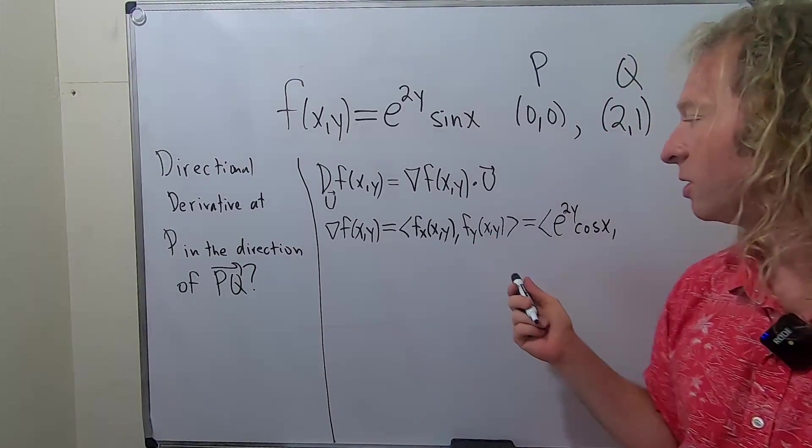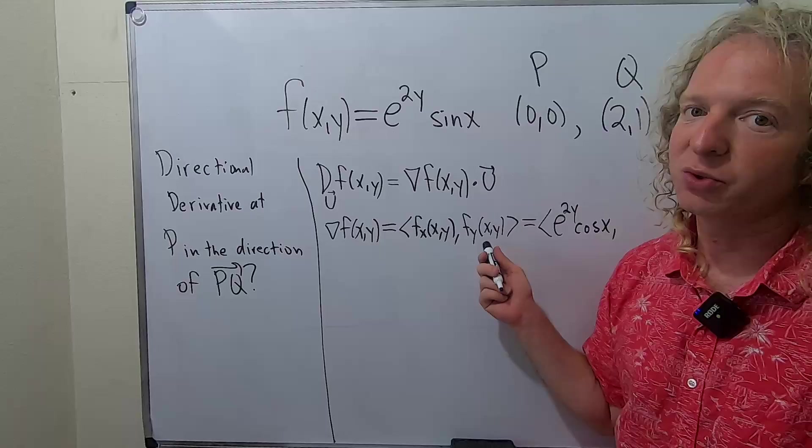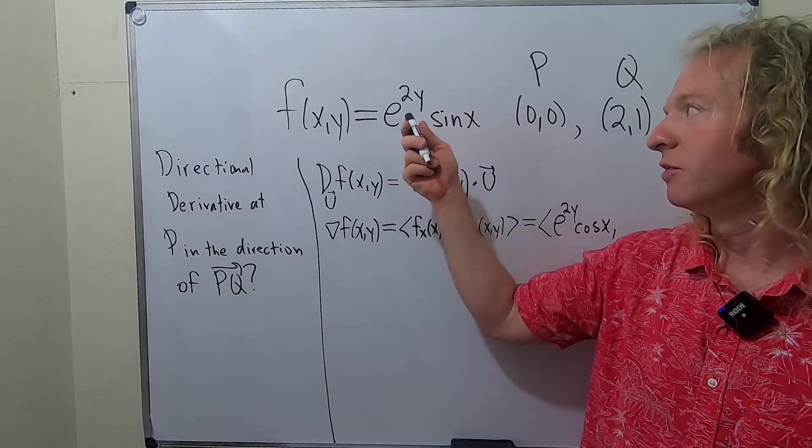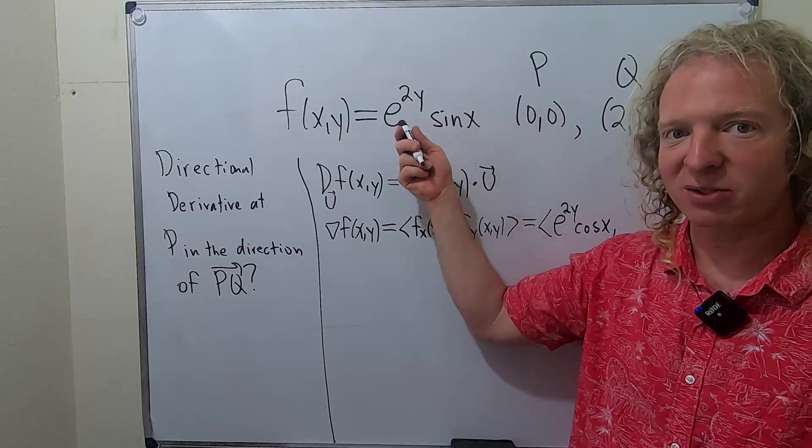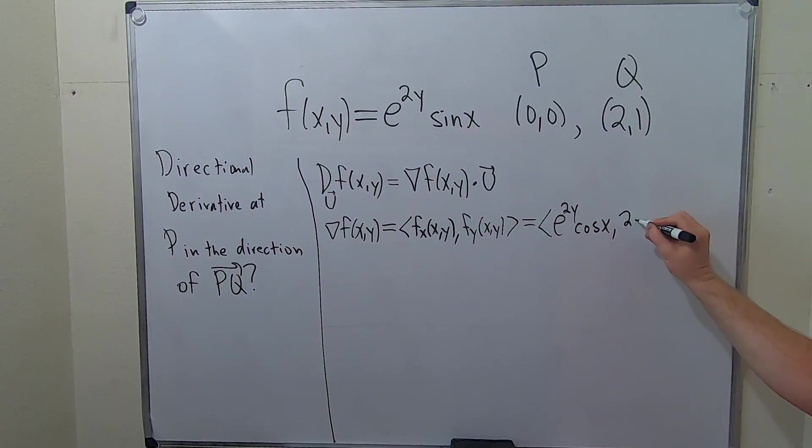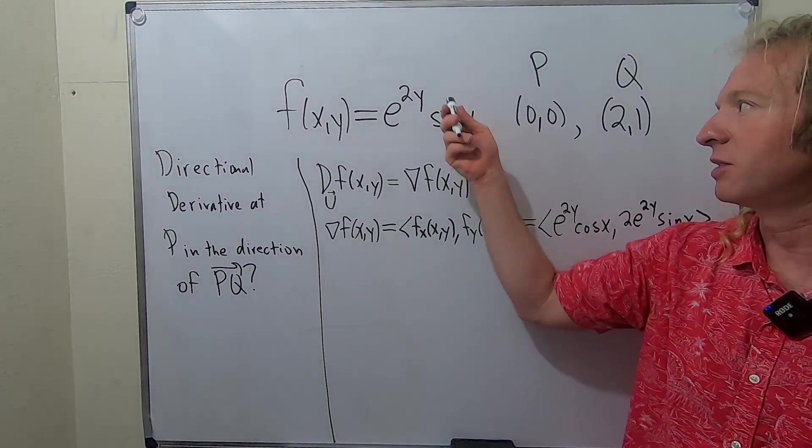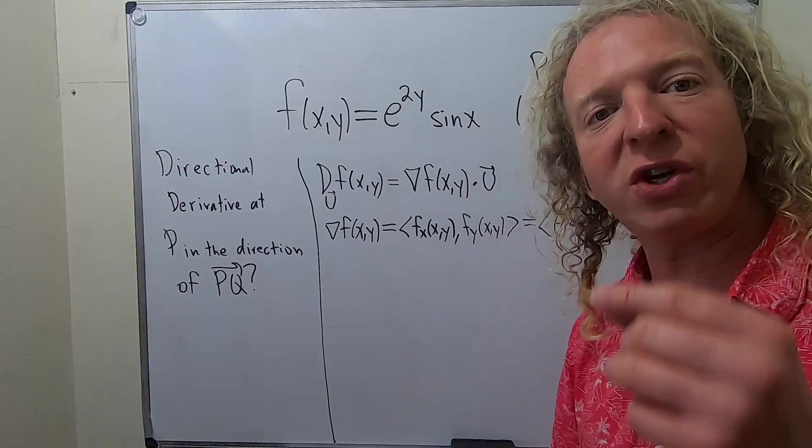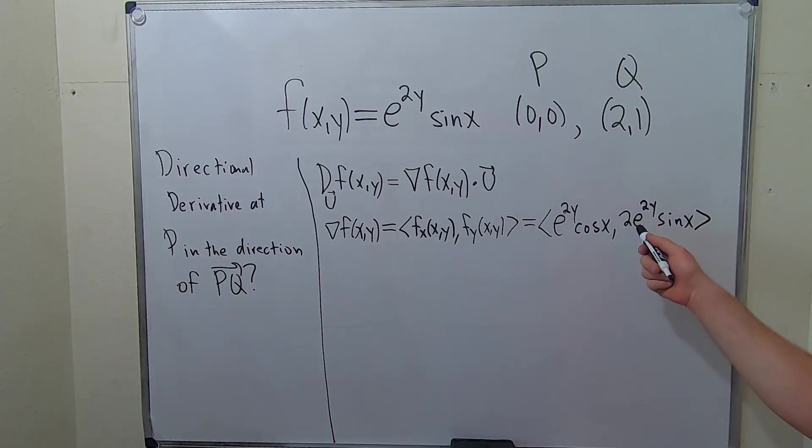To find this one, we take the partial with respect to y. We treat all of the x's as constants. So, we're treating this as a constant. The derivative of e to the x is e to the x. So, here it's e to the 2y times 2. That's from the chain rule. So, it'll be 2 e to the 2y sine x. The derivative of e to the 2y is e to the 2y times the derivative of 2y, which is 2. That's where you get the 2 from.